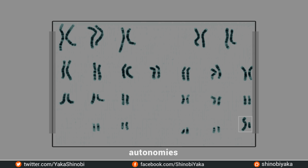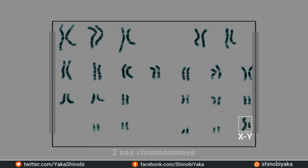The chromosomes that carry genes for sexual characteristics are called sex chromosomes, while those that carry genes for all other characteristics are called autosomes. The sex chromosome that carries the genes for the male is called the Y chromosome, and the chromosome which carries the genes for females is called the X chromosome. We have a total of 46 chromosomes — half come from the mother and the rest from the father. Of these 46 chromosomes, 44 are autosomes and 2 are sex chromosomes.